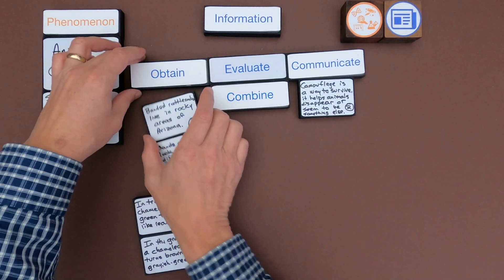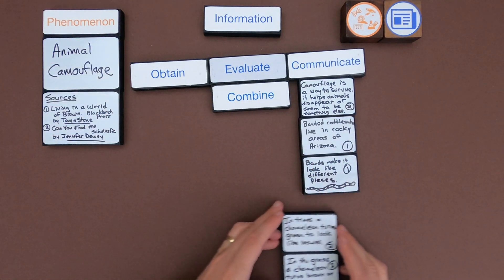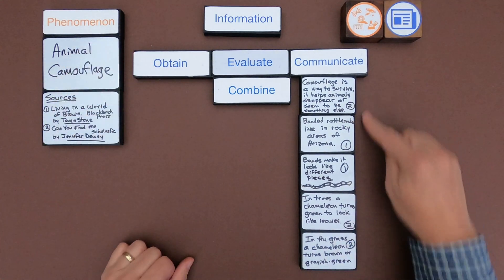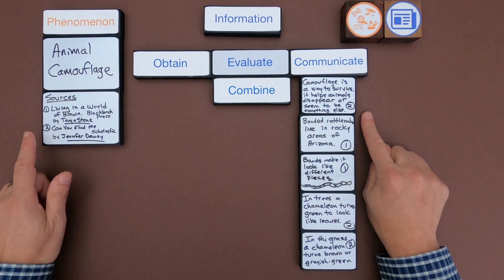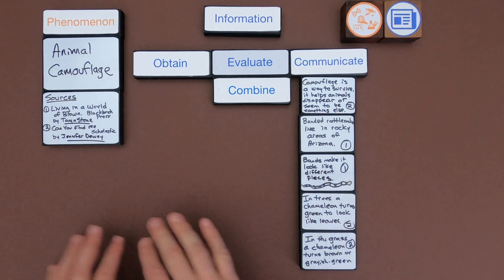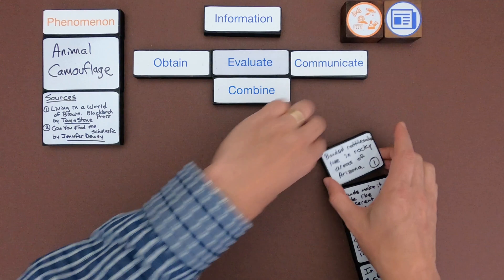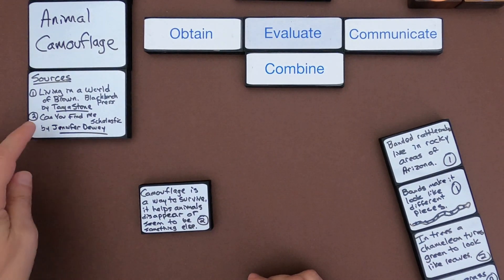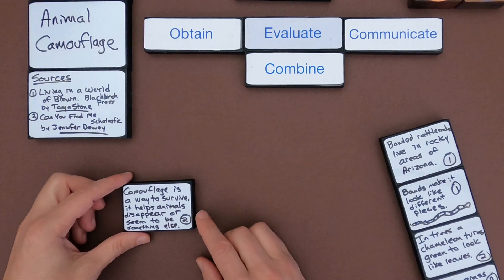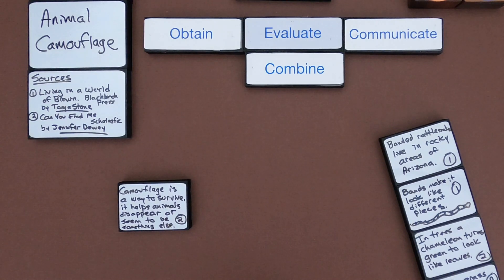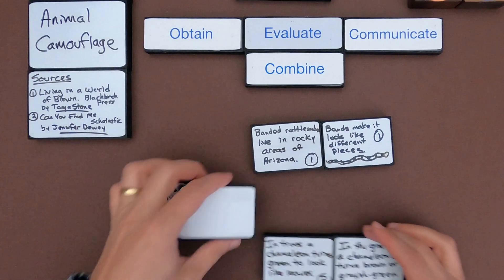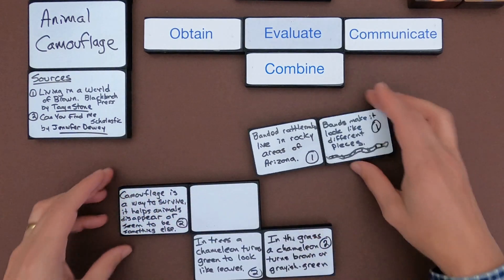And so what I'm now going to do is I'm going to start combining the information from these two sources so I can communicate that information. I think maybe I would start with rattlesnakes as an example and then maybe move to chameleons as I start to organize how I'm going to communicate. Now this could be written. I would make sure I want to quote things that come directly from the source. But let me show you how it organized and then communicate this information. So I would say according to these sources, both by Tonya Stone and Jennifer Louie, Dewey, camouflage is a way to survive. It helps animals disappear or seem to be something else. And maybe I would list the two examples.